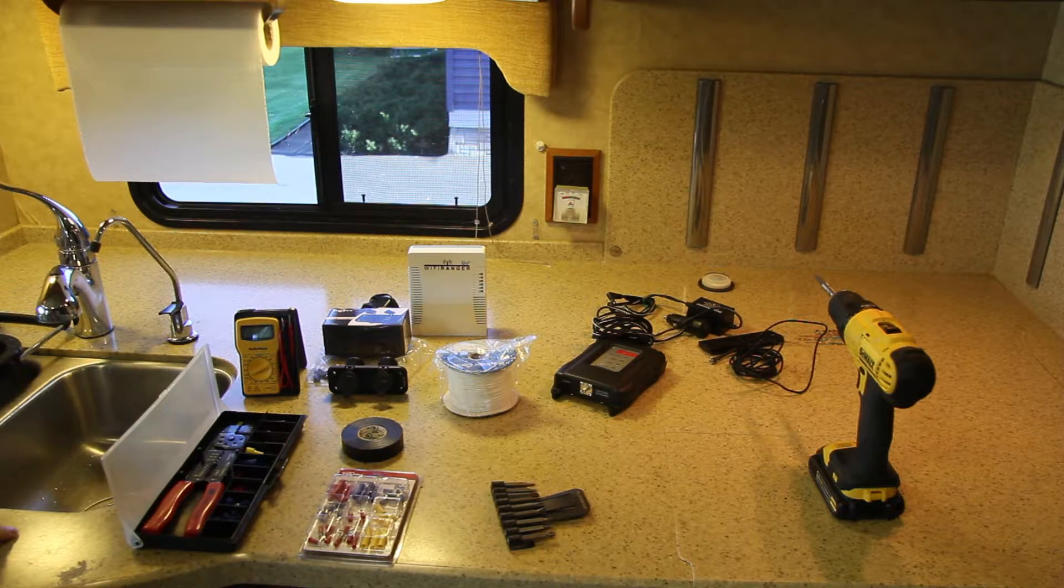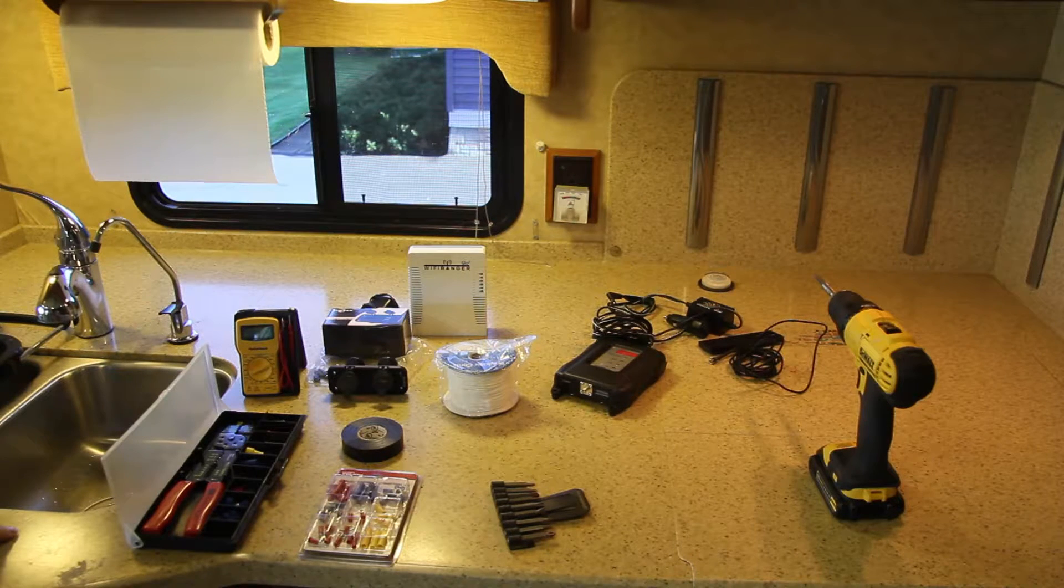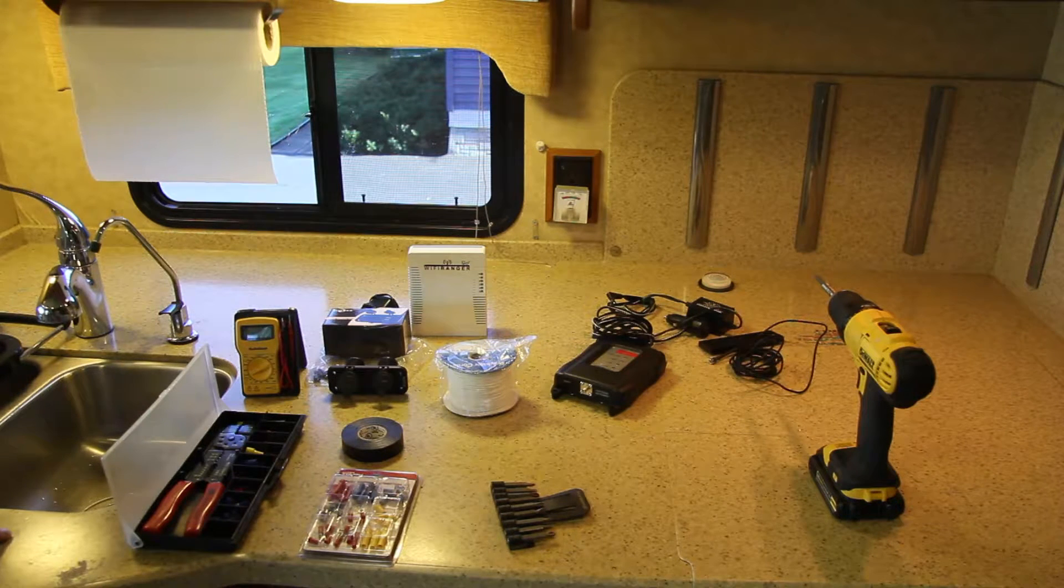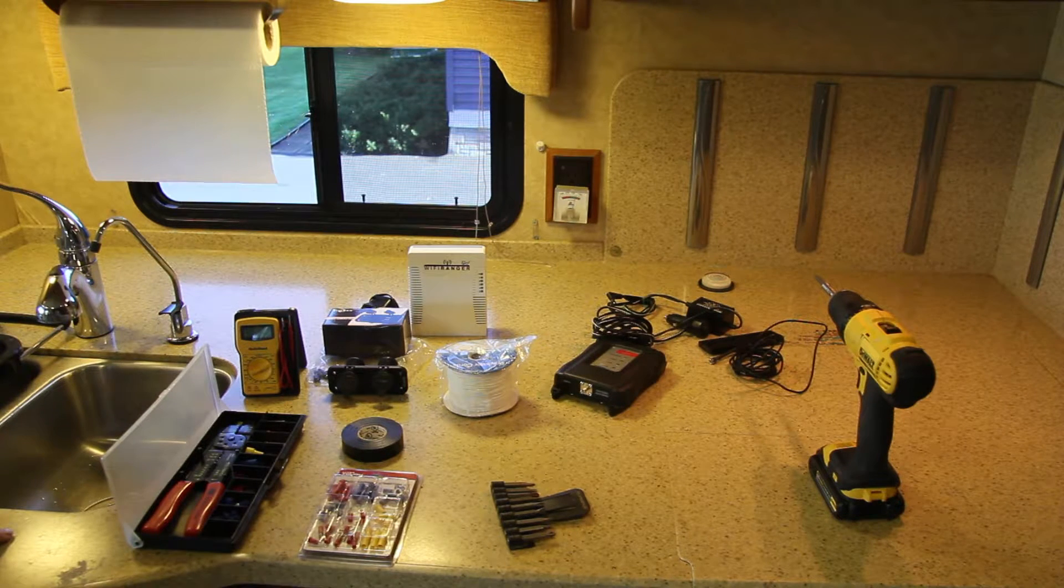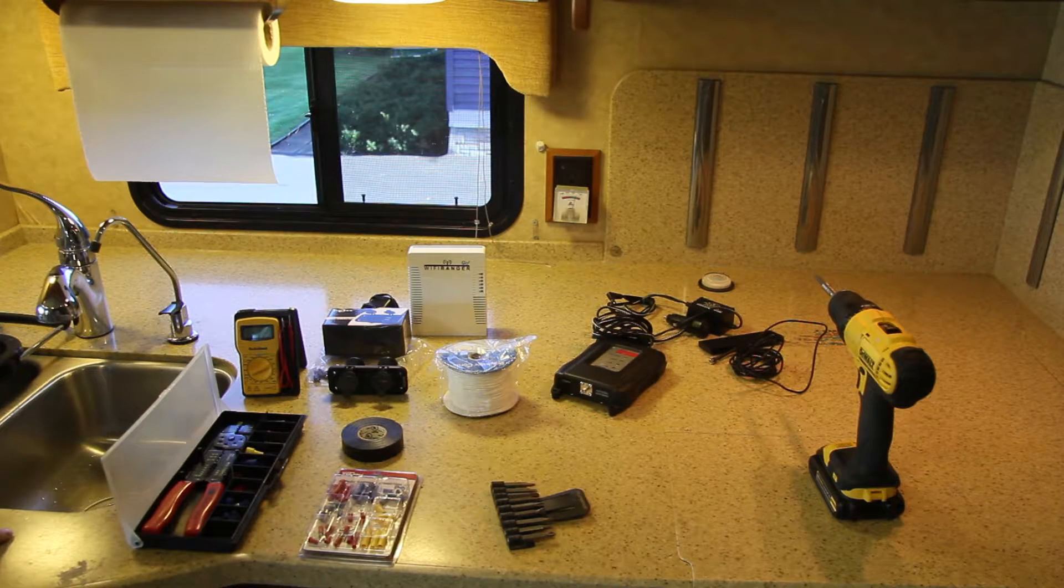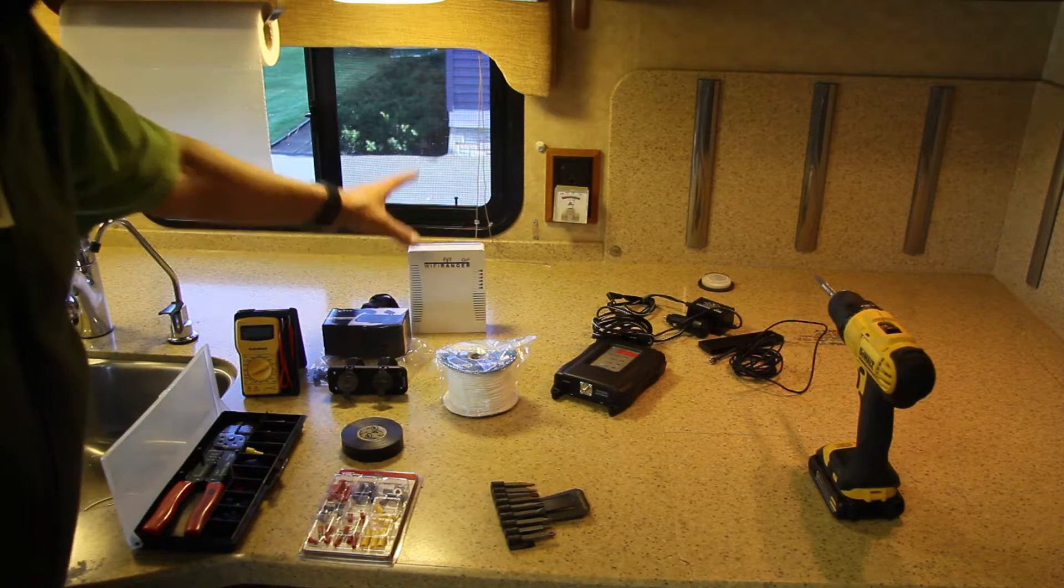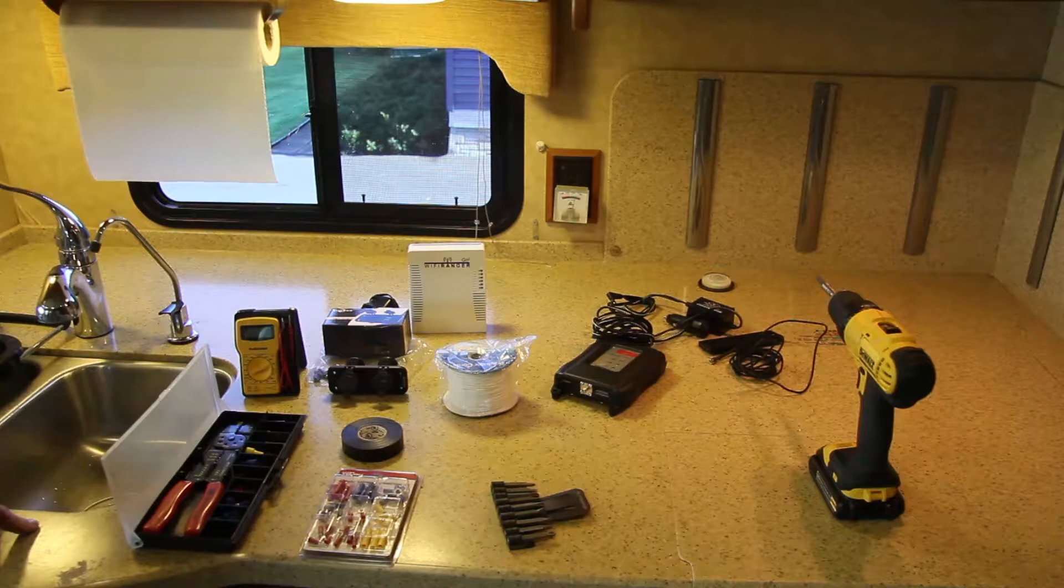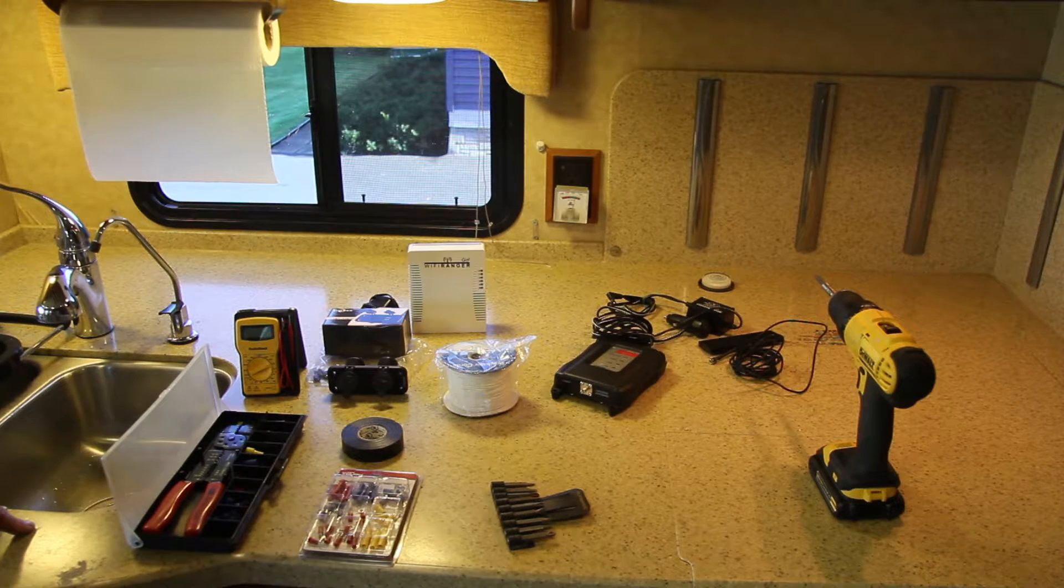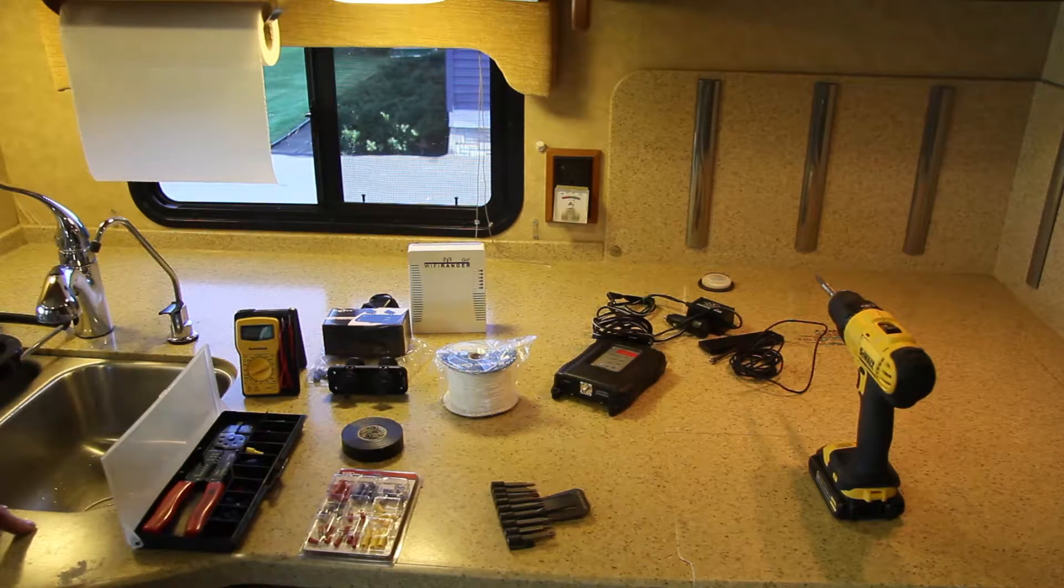Another advantage of the Wi-Fi Ranger is that it is a single connection to the campground Wi-Fi. When we connect to campground Wi-Fi and pay for it, depending on the level of service we get, we either get one connection or three connections. The Wi-Fi Ranger allows all of our devices to connect inside the RV with a single connection going out to the campground. So there's extended range and a single connection.